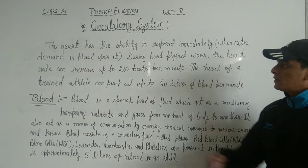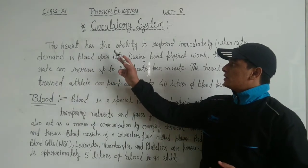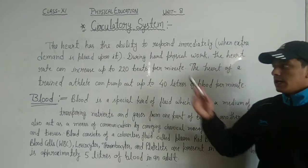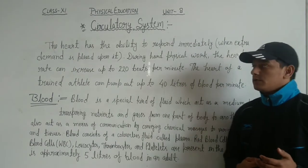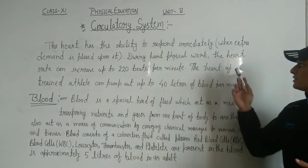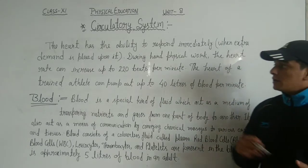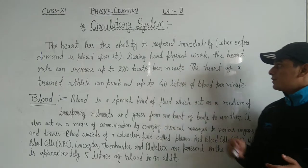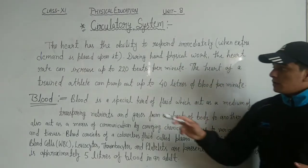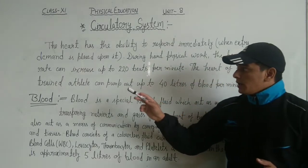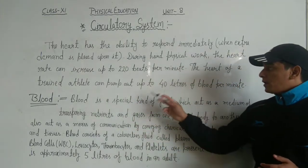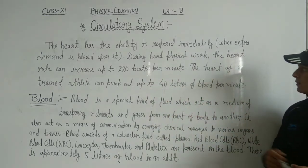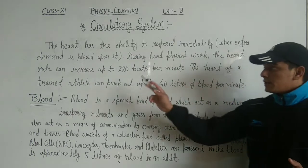The heart has the ability to respond immediately when extra demand is placed upon it. During physical work, the heart rate can increase up to 220 beats per minute. The heart of a trained athlete can pump up to 40 liters of blood per minute.